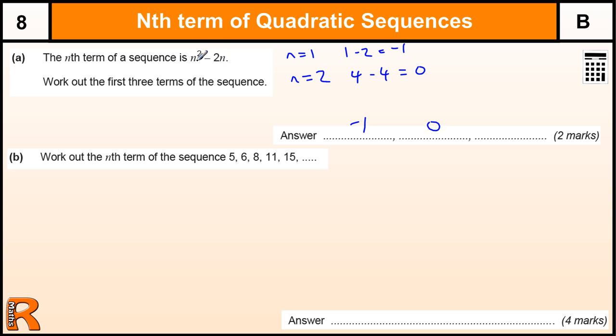And the third term, when n is 3, 3 squared is 9. Take away 2 lots of 3, which is 6, gives us 3. So two marks from that. You'd get one mark if you got 2 out of 3 right.